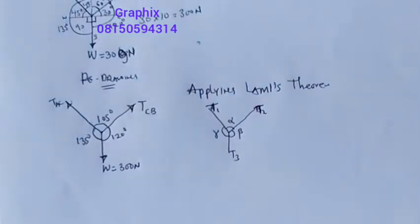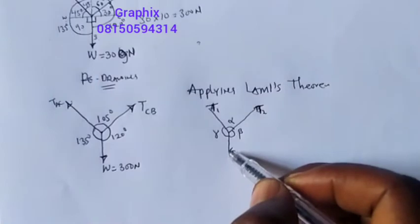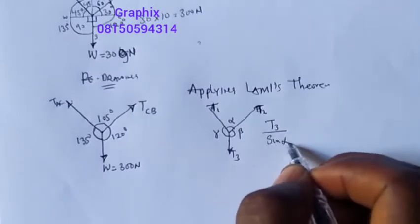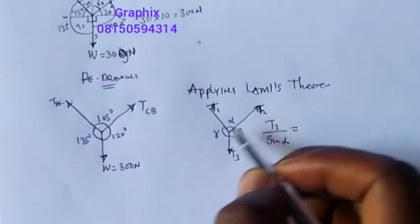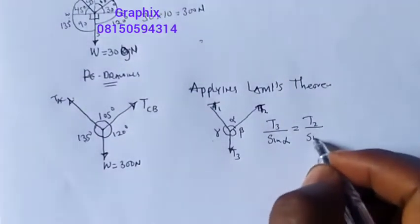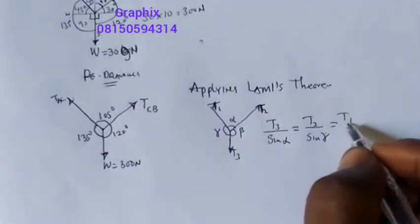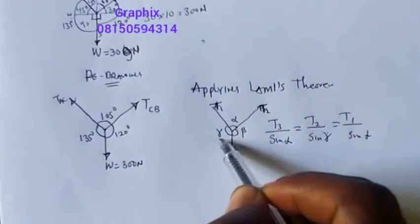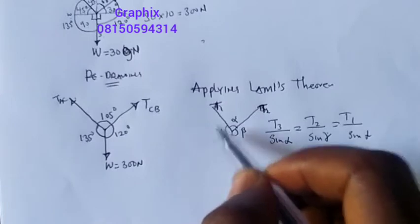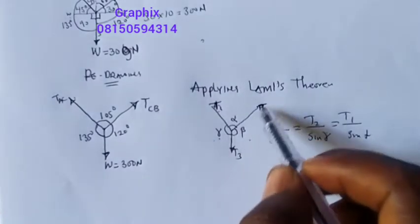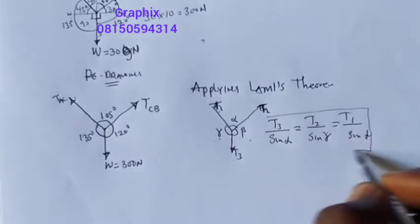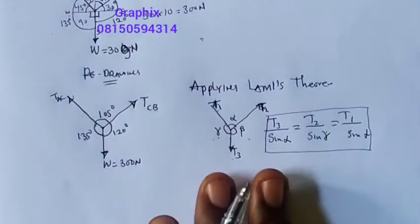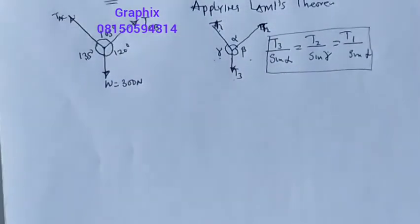Applying Lami's theorem: each force is proportional to the sine of the angle between the other two forces. So T3 over sine(alpha) equals T2 over sine(gamma) equals T1 over sine(beta). This is the Lami's theorem formula. We now apply this principle to our question.